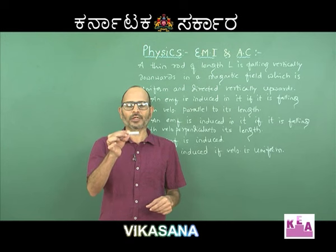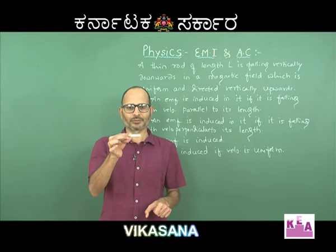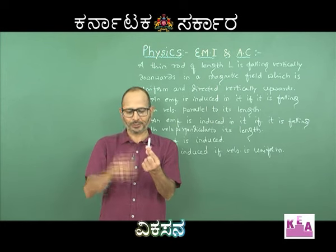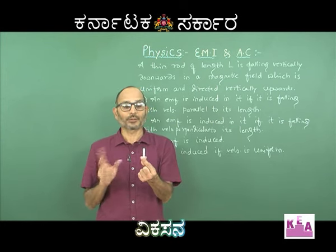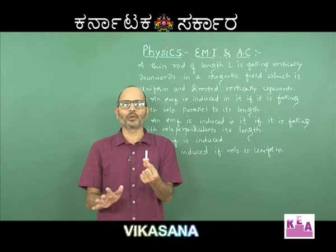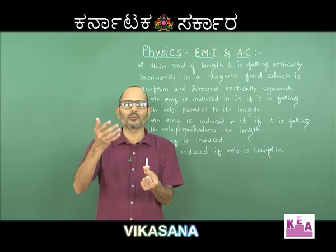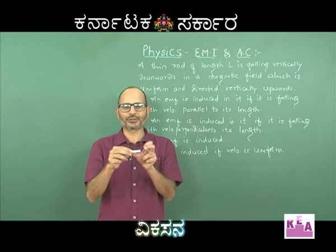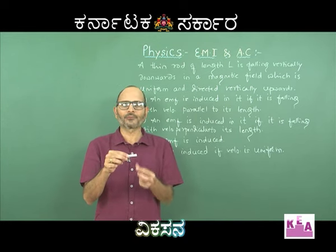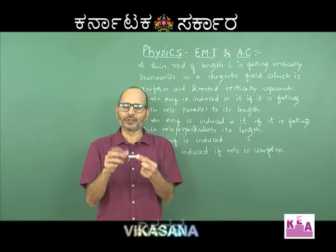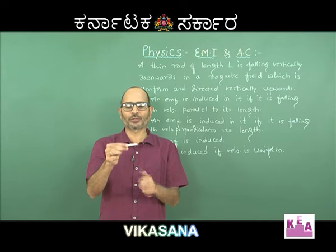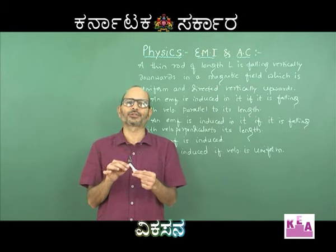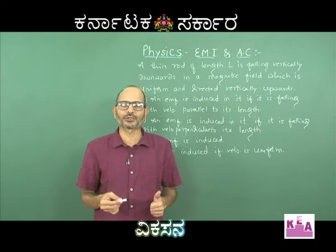It may be falling with its length perpendicular to the velocity, or it may be falling with its length parallel to the velocity. But how is the magnetic field? It is uniform and it is directed vertically upwards. So the charge carriers — the free electrons in this conductor — are subject to a force that depends on the rod's orientation.